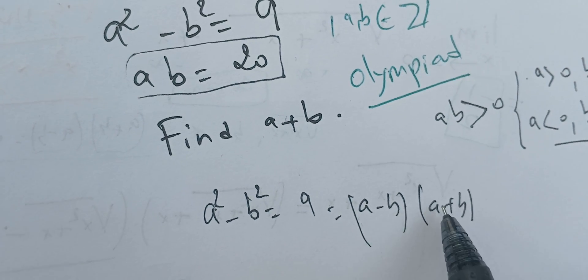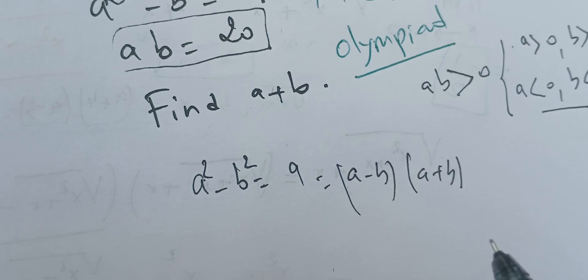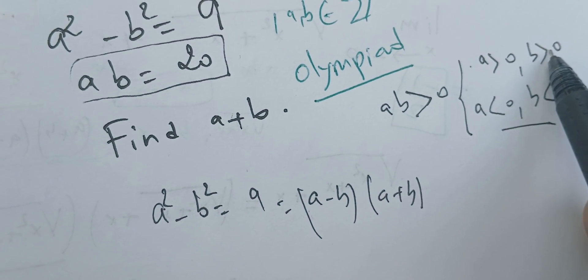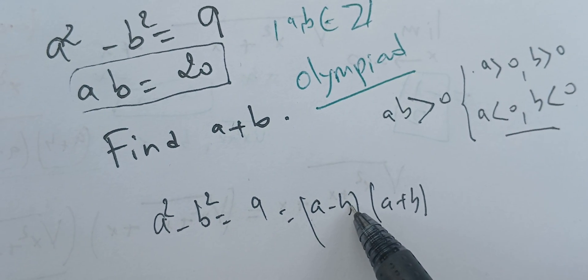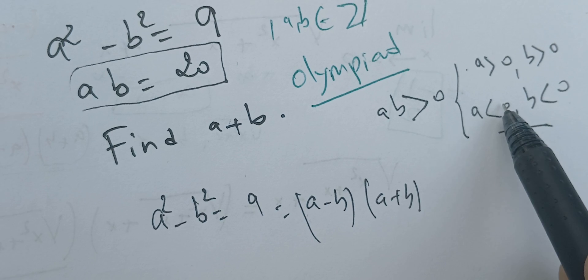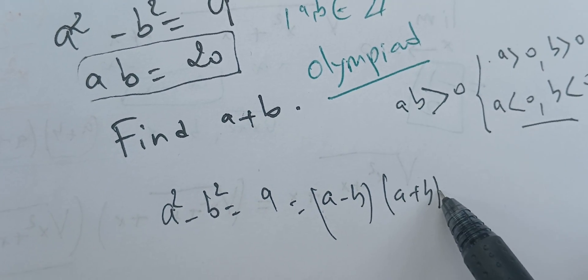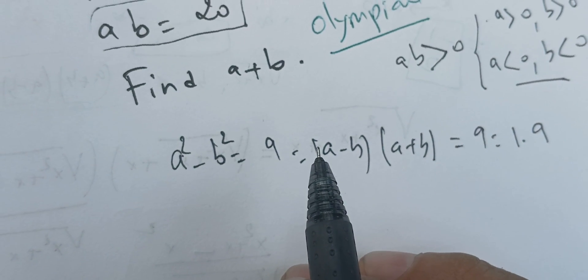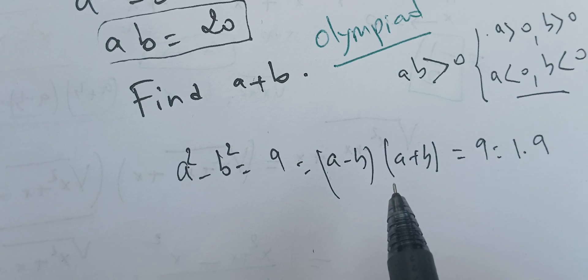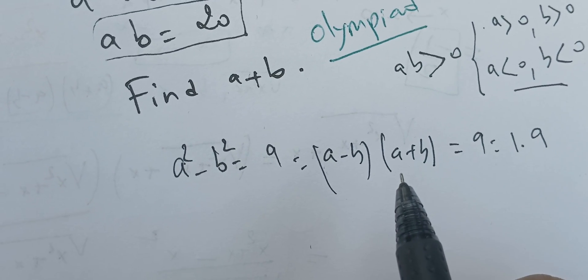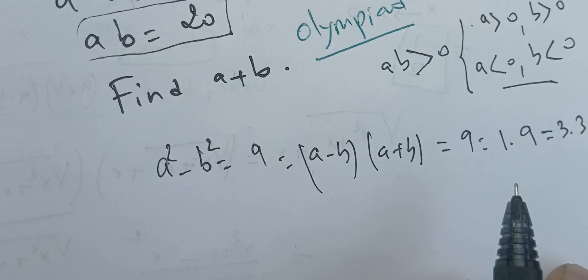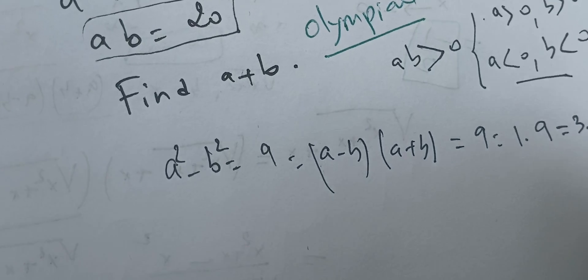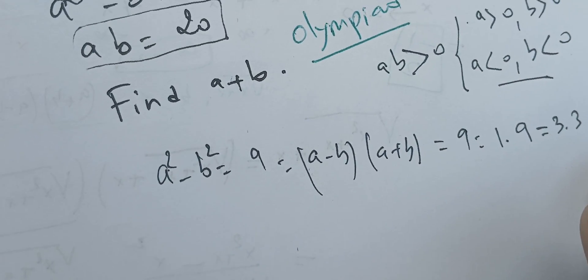So (a minus b) and (a plus b) both belong to ℂ. Their product is 9, and we consider factor pairs. We can have 1 times 9, or the two factors equal to each other — that would require b equals zero. We'll treat all these cases systematically.